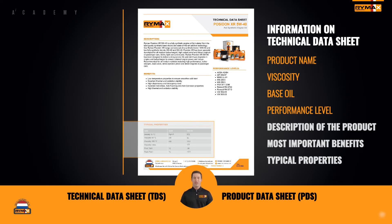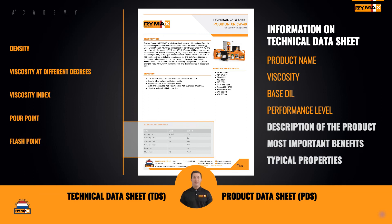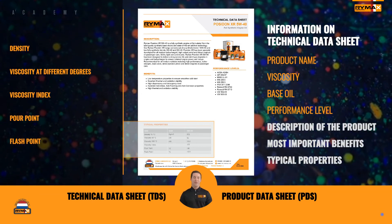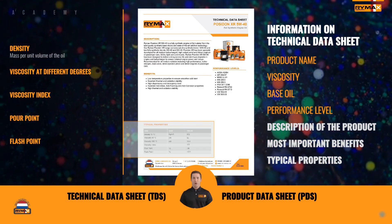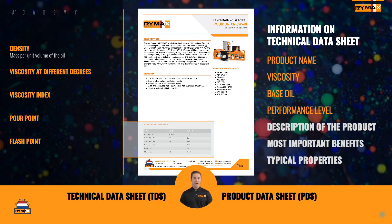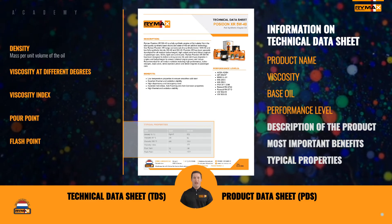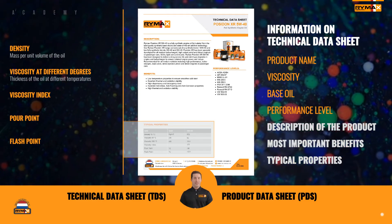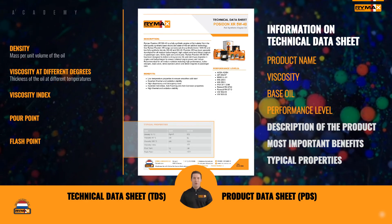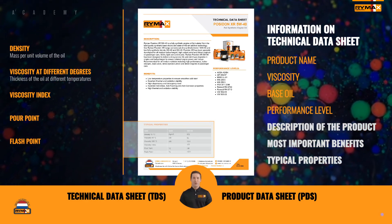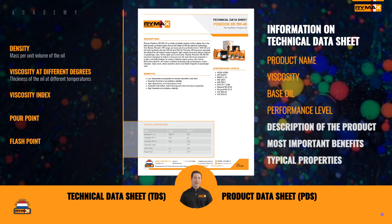Typical properties listed for engine oil are the density, the viscosity at different degrees, the viscosity index of the product, the pour point, and flash point. The oil density refers to the mass per unit volume of the oil — it's a crucial physical property that determines the weight of a given volume of oil. The viscosity tells you something about the thickness of the oil at different temperatures, so you will always see that the higher the temperature, the lower the viscosity, meaning when the oil gets hotter, the viscosity comes down.